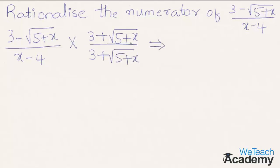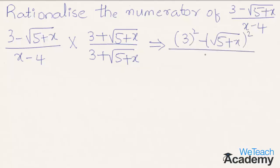That implies, by multiplying, we get here 3 squared minus under root 5 plus x whole squared, divided by x minus 4 into 3 plus under root 5 plus x.